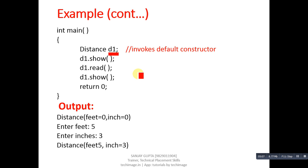If you want to create more objects like d2, d3, d4, and so on, all these objects will be initialized with zero in feet and inch respectively, because we have initialized these variables to zero. You can choose any value you want to assign into the feet and inch variables. So this is all about the default constructor — with the help of a constructor you can remove garbage values and assign specific values to the data members available in the class.